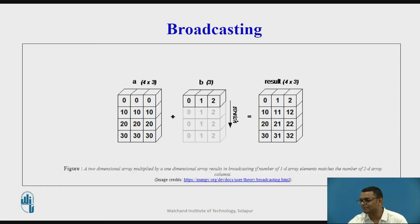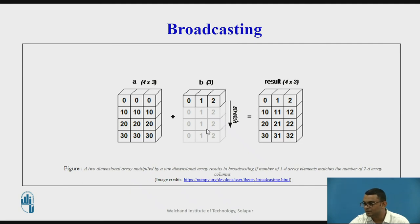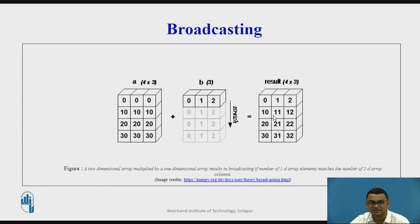Here we have matrix A of size 4 by 3 and matrix B which is one-dimensional having size 3. When performing addition, matrix B is broadcasted. The values 0, 1, 2 added to the first row gives 0, 1, 2. Then 10 plus 0 gives 10, 10 plus 1 gives 11, 10 plus 2 gives 12, and so on. This is how broadcasting works.